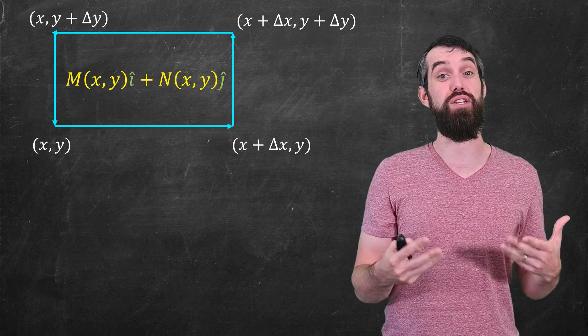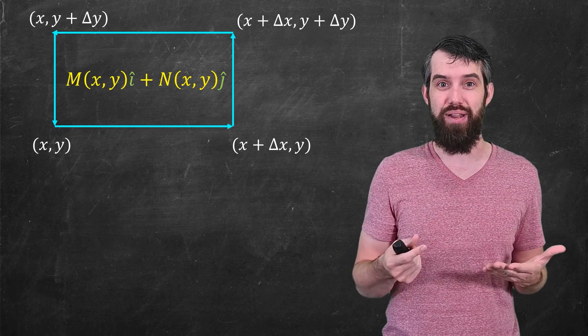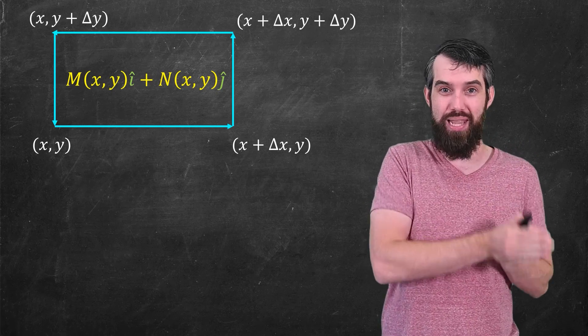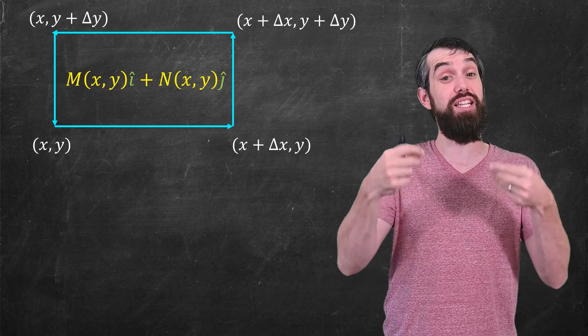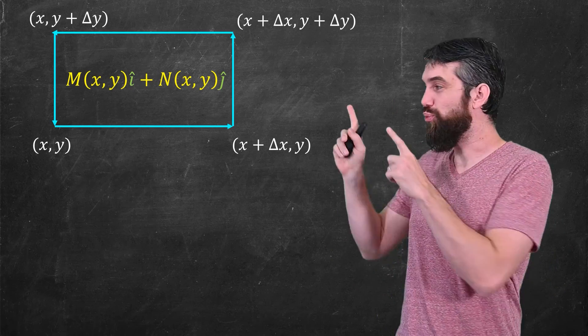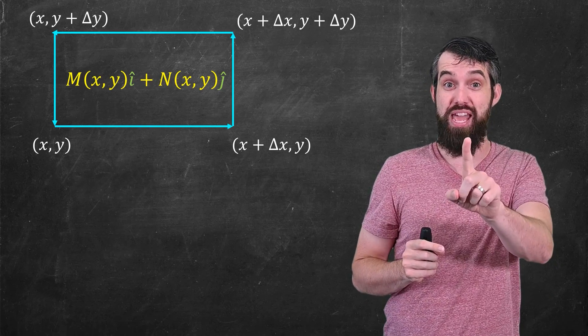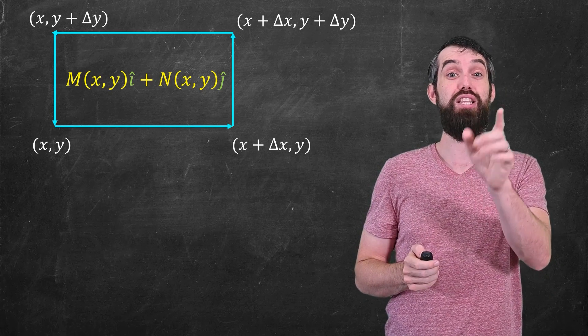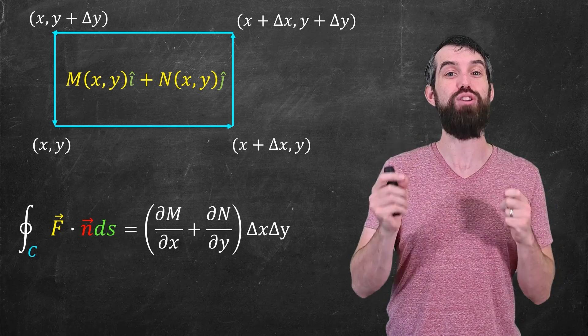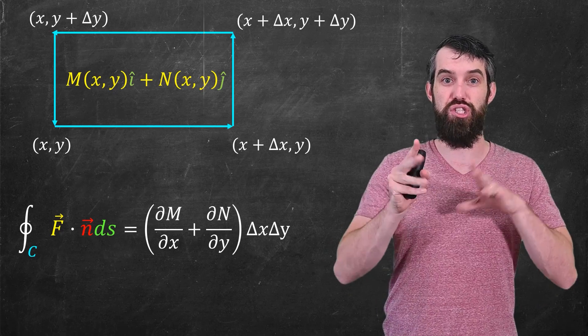And then we were asking the question of what is the circulation around it, now we want to ask what is the flux outside of it. The computation is almost exactly the same, and it was a little bit long last time, so I'm not going to repeat it, and I'm going to leave it as a challenge for you. So my challenge to you is to compute the flux around this rectangle, and see if you can get it into the form, okay, I'm going to spoil the answer, so pause if you don't want to see it, into the form partial of m with respect to x plus partial of n with respect to y delta x delta y.